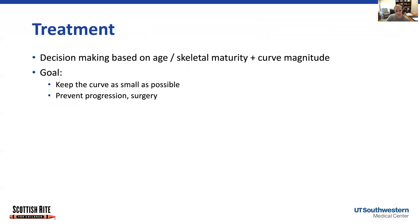In terms of treatment, our decision is really made based on the age of the patient, how skeletally mature they are, and how big their curve is. Our goal is to keep the curve as small as possible — specifically under 50 degrees — and to prevent the curve from getting worse to the point where the patient would need surgery.